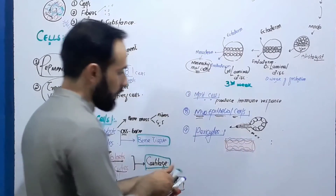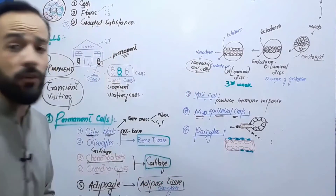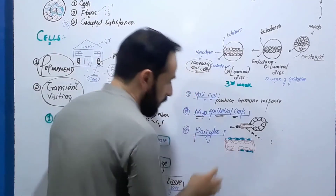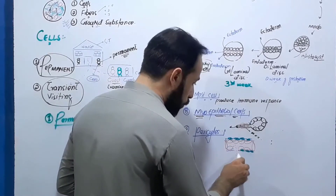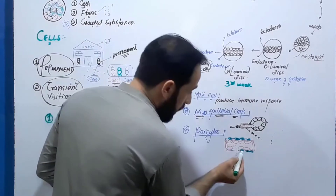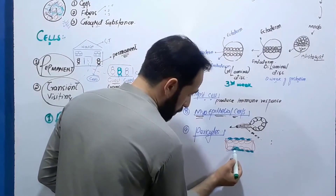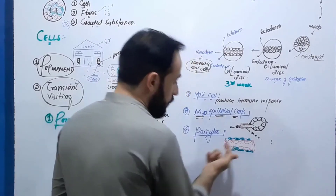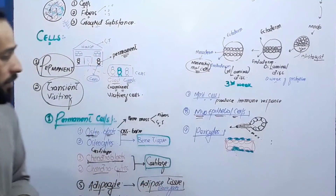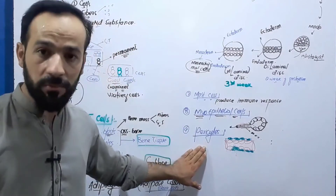Pericytes are present in the basement membrane and perform many important functions. If there is any damage to the endothelial cell layer, blood would ooze out and cause hemorrhage — but pericytes prevent this. Whenever there is damage to the endothelial cell layer, pericytes rapidly reproduce mitotically, migrate to the damaged area, stop blood from escaping, and prevent dangerous substances from entering the blood.